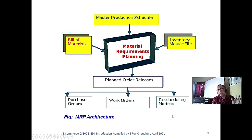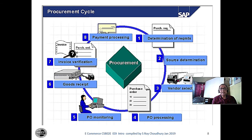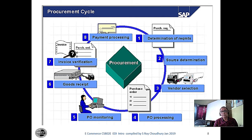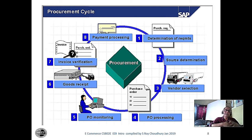MRP was the starting point, in the 60s and 70s. A typical procurement cycle from SAP includes determination of requirements, where various departments raise requirements, then source determination. Moving from MRP software to ERP software — MRP to ERP — ERP also takes care of accounts. The main difference between MRP and ERP is that ERP takes care of accounts, sales, and production planning.